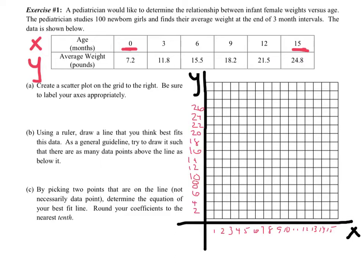Now, all a scatterplot is, is me plotting these points. So, let me label this as age. And this side was average weight. So, when I have a 0 age, go to 0, I should be plotting 7.2 in height. So, I'm just going to estimate that it's right about there. And this is, that's perfect. We don't need to be exact.